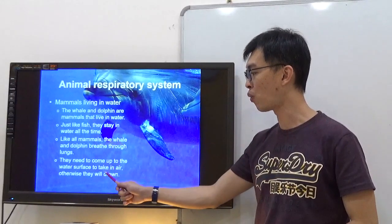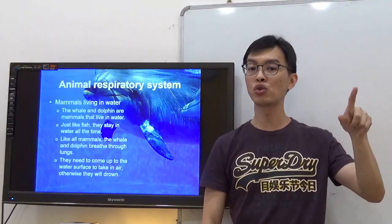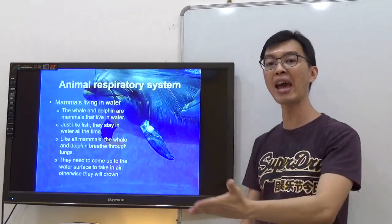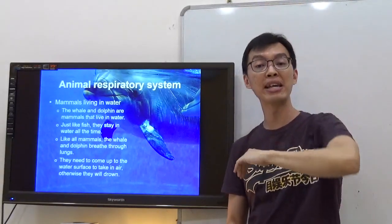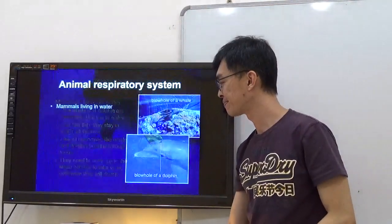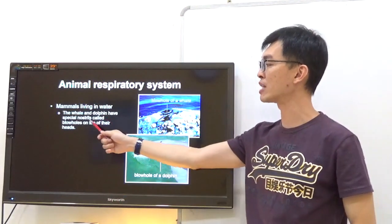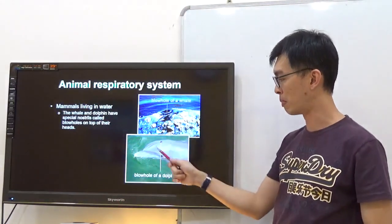They need to come out to the water surface to take in air, otherwise they will drown. They do not have gills. Since they have no gills, they cannot take in oxygen from water. They must come out to the surface to take in oxygen from the surrounding. Whales and dolphins have special nostrils called blowholes on top of their heads.